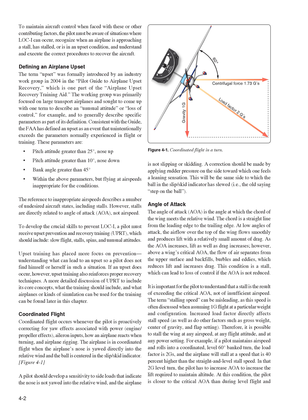The angle of attack, AOA, is the angle at which the chord of the wing meets the relative wind. The chord is a straight line from the leading edge to the trailing edge. At low angles of attack, airflow over the top of the wing flows smoothly and produces lift with a relatively small amount of drag. As the AOA increases, lift as well as drag increases; however, above a wing's critical AOA, the flow of air separates from the upper surface and backfills, burbles and eddies, which reduces lift and increases drag. This condition is a stall, which can lead to loss of control if the AOA is not reduced.